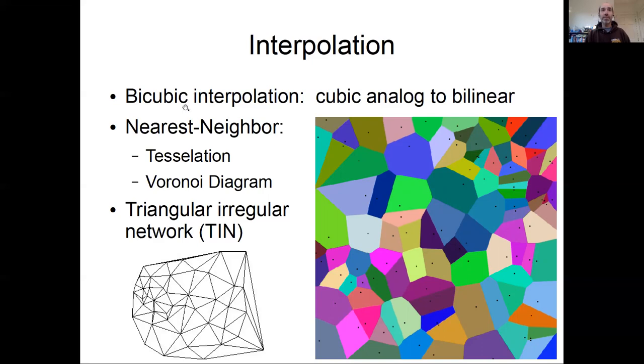Other options are things like nearest neighbor interpolation, which literally just says assign any point the value associated with whatever is the closest point to it. Nearest neighbors are related to geometric concepts such as tessellation and Voronoi diagrams. This figure on the right is an example of a tessellation, where I've assigned a color to the attribute value and assigned each point the value to its nearest neighbor.